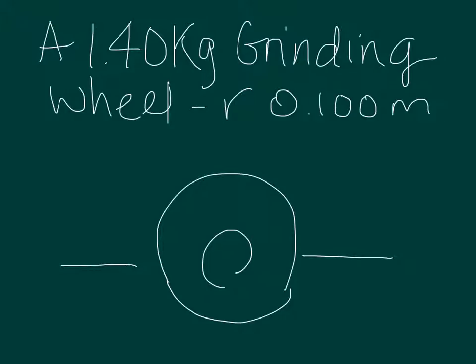In this problem, a 1.4 kilogram grinding wheel is in the form of a solid cylinder of radius 0.1 meters. And for the first part, we are asked.